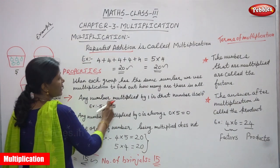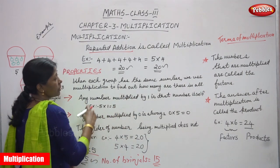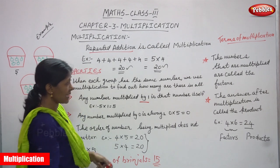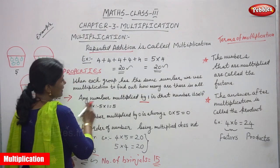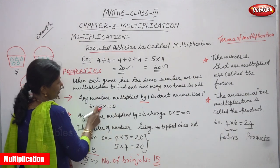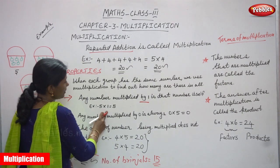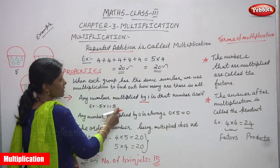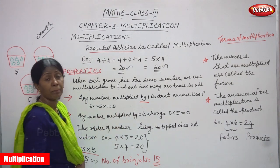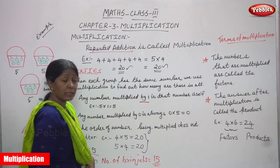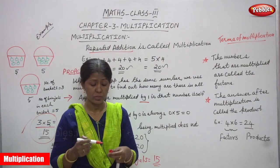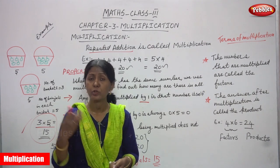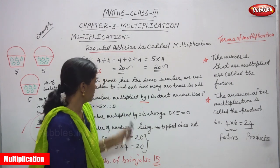Second property: any number multiplied by 1 is that number itself. If you multiply by 1, you get the same number. For example, 5 into 1 equals 5. Even 4 into 1 equals 4, 2 into 1 equals 2, 10 into 1 equals 10, 100 into 1 equals 100, 1000 into 1 equals 1000, 500 into 1 equals 500, 200 into 1 equals 200.